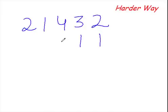So let's first see the usual way of multiplying 21,432 with 11. This is the same column method of multiplication you must be aware of.